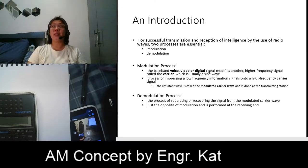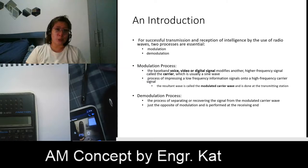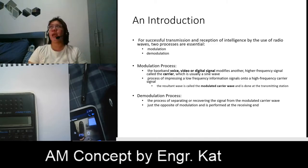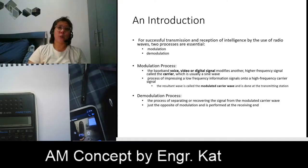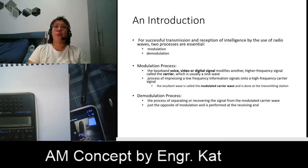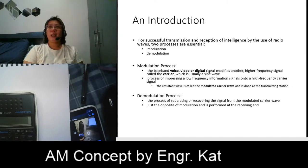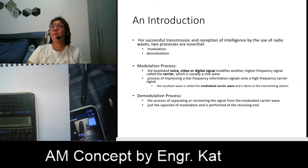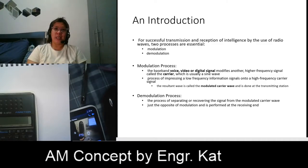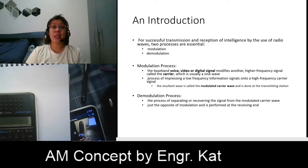Also in TV broadcasting, some scene in front of your television camera is sent many kilometers away to viewers at home. And in telemetry, a probe is sent to outer space — for example, to the moon or Venus — checking their environments. That probe sends information it gathered millions of kilometers back to Earth so that our scientists can study the environment there. Those things are not possible if we are not going to perform this modulation process.